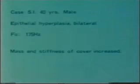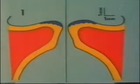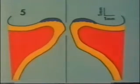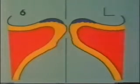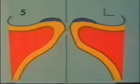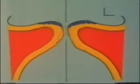Let's look at the actual vibrations again. In epithelial hyperplasia, mass and stiffness of the cover are increased. The vocal cords present small asymmetrical movements. No wave is seen on the hyperplastic epithelium. The movements of the lesions are like that of a boat rolling on the waves. The glottis is not completely closed. Now let us look at the schematical representations.